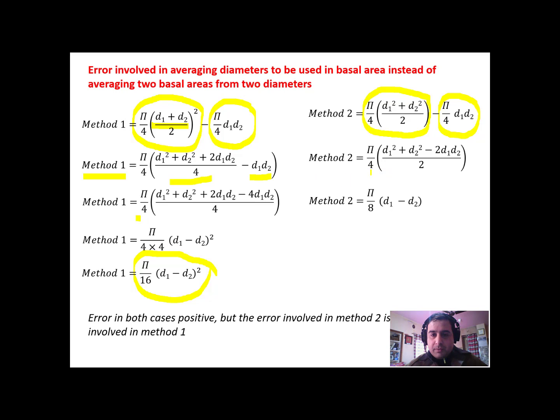Now, coming towards the method 2, we first of all take pi by 4 as common, then solving the two terms, we get d1 square plus d2 square minus 2d1 d2 upon 2. Further solving this equation, we get pi by 8 d1 minus d2.